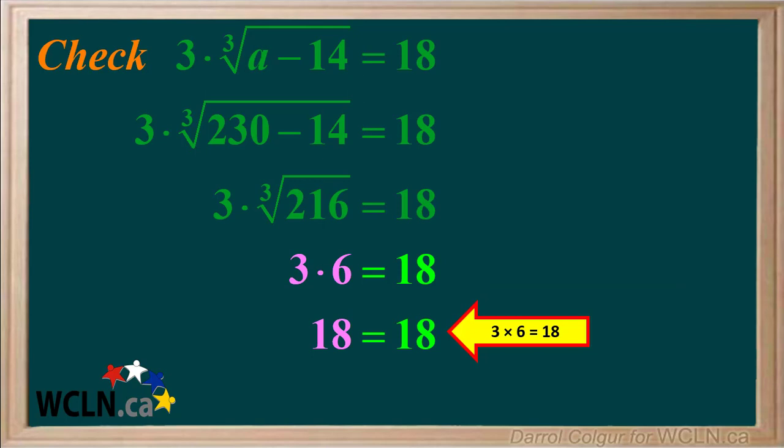So we have 18 on the left. So we're left with 18 equals 18, which is correct. Therefore 230 is the correct value for a when this equation is solved.